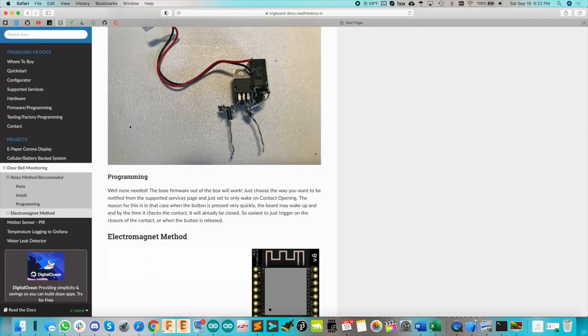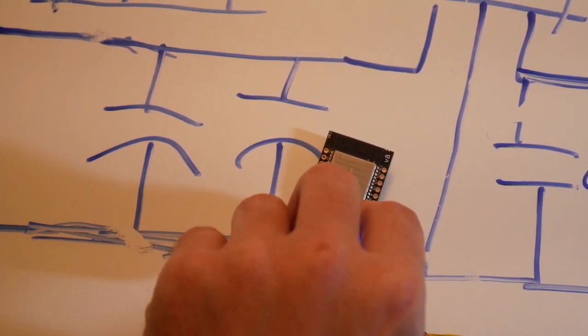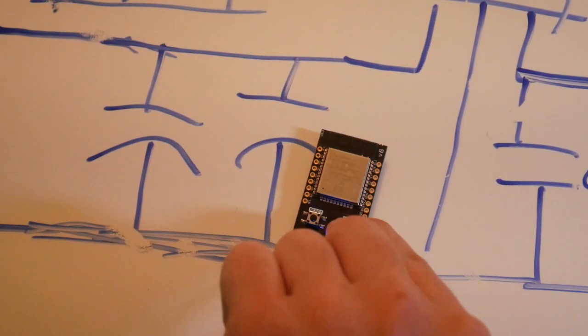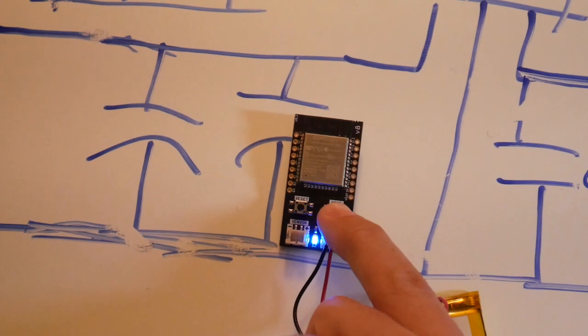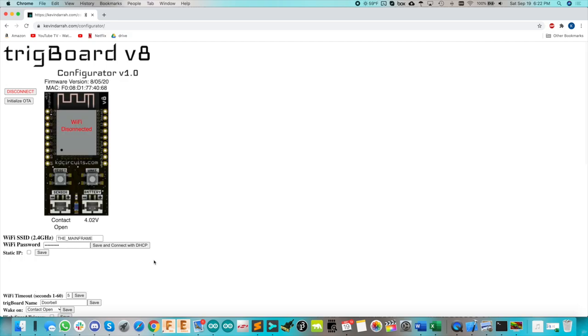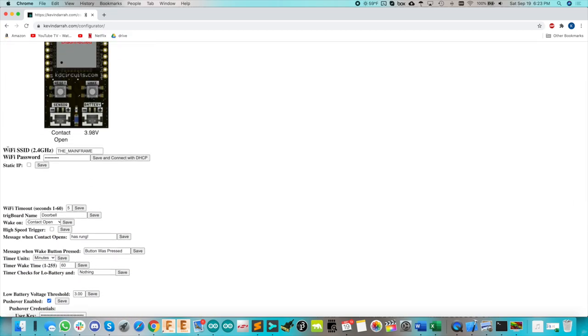For programming it's super easy. We don't even have to do anything. Let's launch the configurator here. I'm actually working in Safari so we got to make sure we're in Google Chrome for this. Now I'm going to click connect from Chrome. I'm going to press and hold the wake button on the TrigBoard and we should see the LED flash. Okay, now the LED is flashing. We see here TrigBoard, we'll go ahead and pair to it.